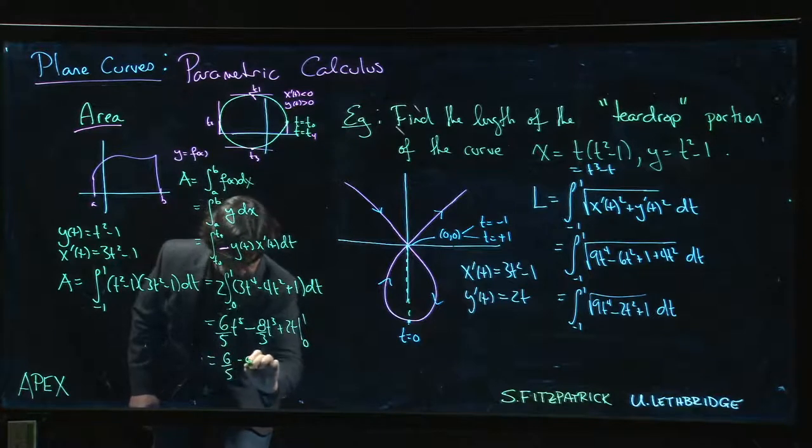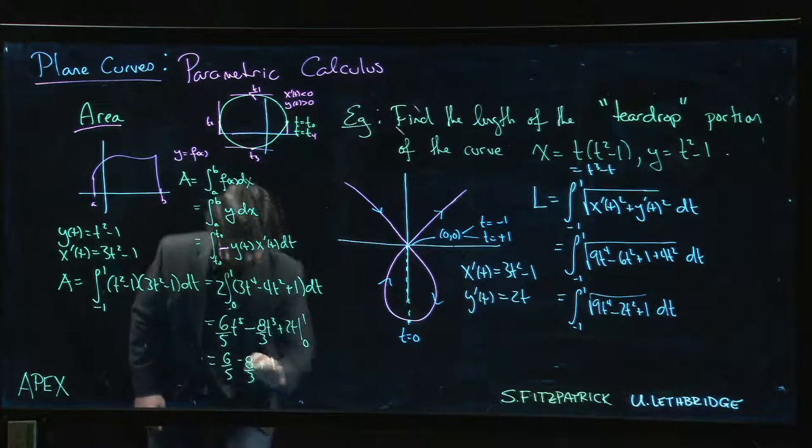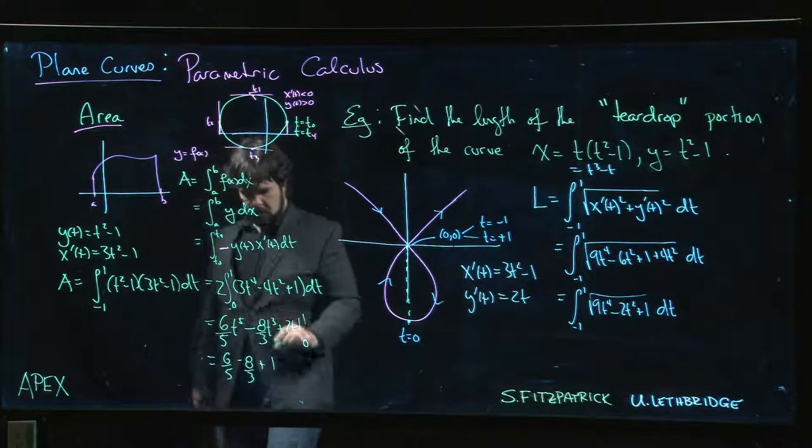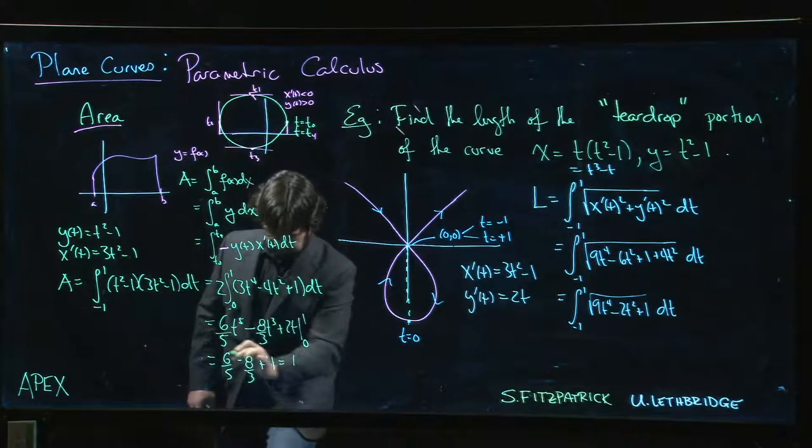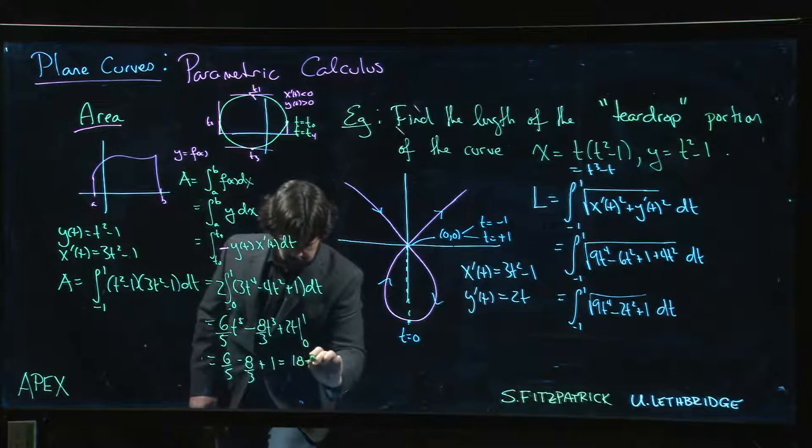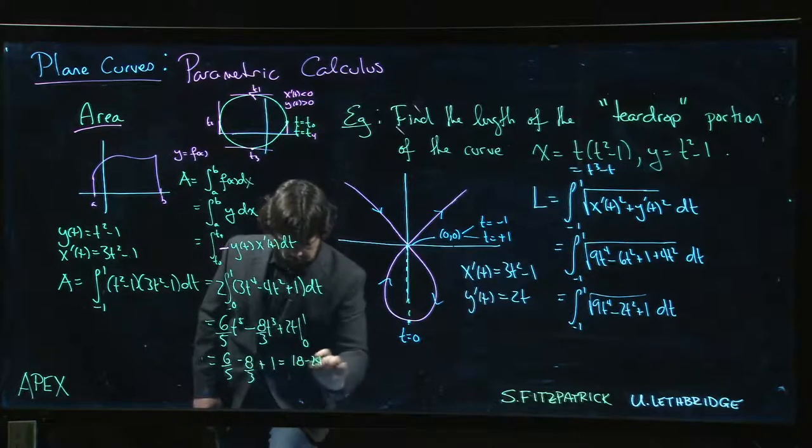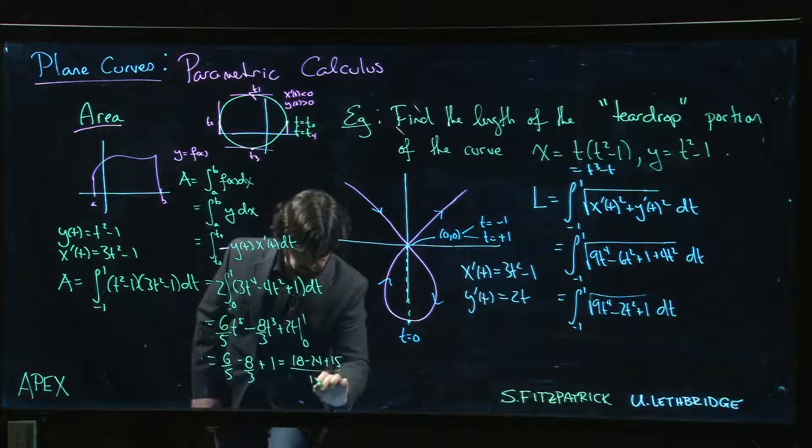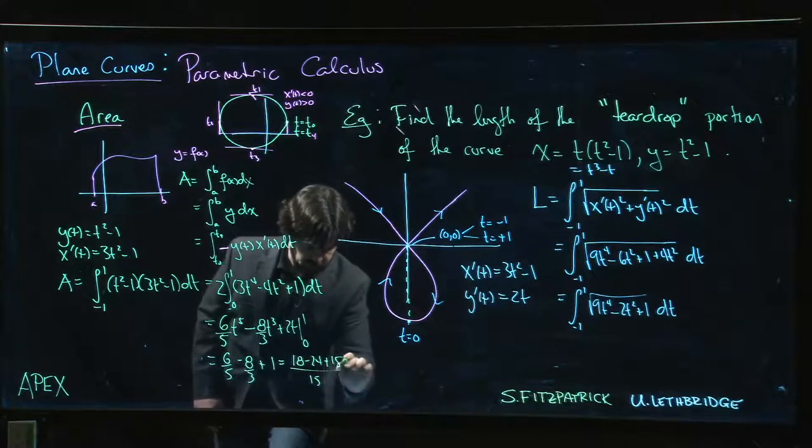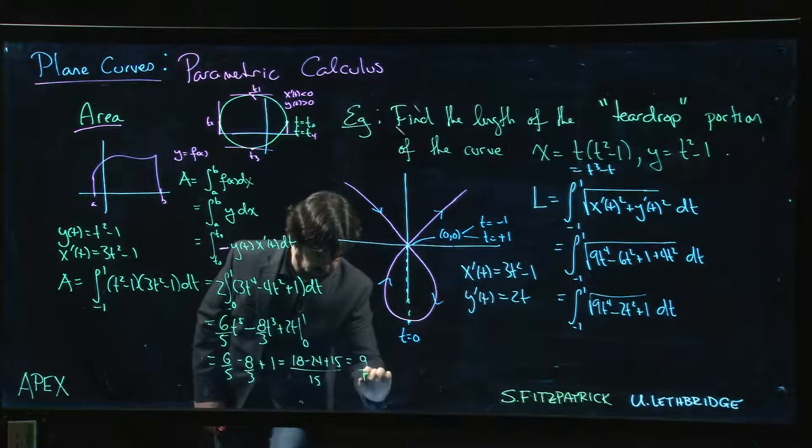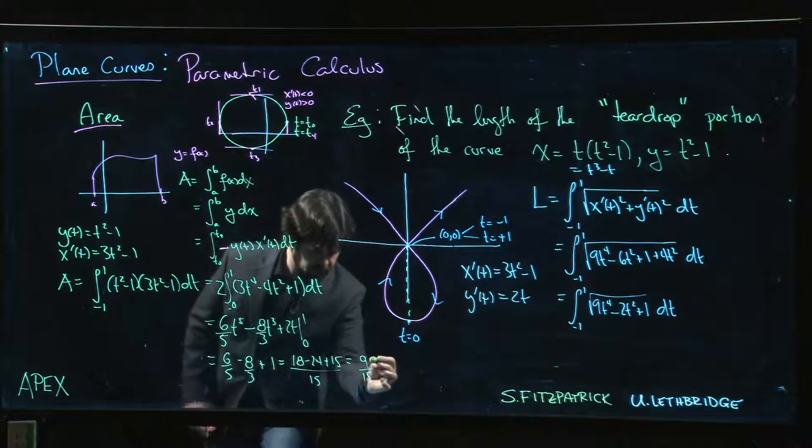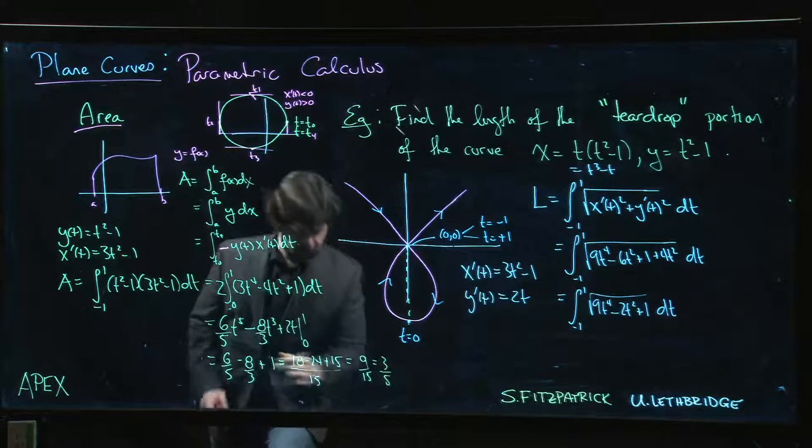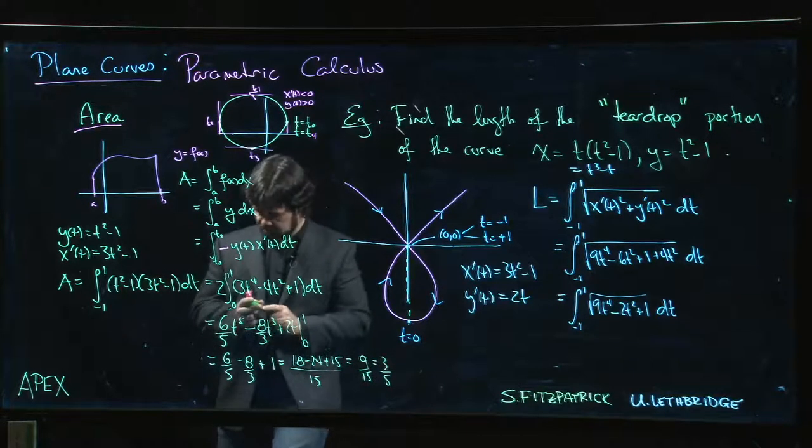So I get 6/5 t⁵ - 8/3 t³ + 2t from 0 to 1. So I get 6/5 - 8/3 + 1. Let's see, that is 18 - 24 + 15 over 15, so that is 9/15 or 3/5.